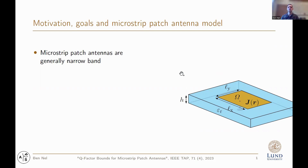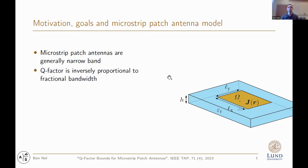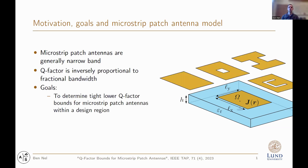One limitation of these antennas is that they are generally narrow band, and a good way of approximating the bandwidth is to determine the Q-factor, which is inversely proportional to fractional bandwidth. Therefore, the goal of this paper is to determine tight lower Q-factor bounds for microstrip patch antennas within a given design region.